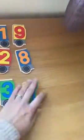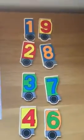So the first thing I'm going to do is to make my number bonds to 10. So I have one and nine, two and eight, three and seven, and six and four.